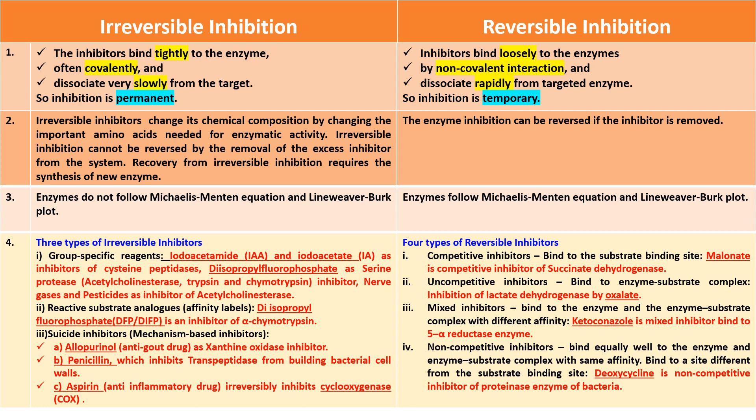An example of a reactive substrate analog is diisopropylfluorophosphate as an inhibitor of alpha-chymotrypsin. Examples of suicide inhibitors are allopurinol as a xanthine oxidase inhibitor, penicillin as a transpeptidase inhibitor, and aspirin as a cyclooxygenase inhibitor.